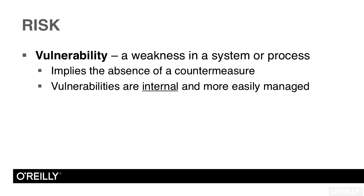If there is a vulnerability, it implies the absence of a countermeasure. A countermeasure is the control that we put in place to help mitigate that risk. As we identify vulnerabilities, we implement countermeasures to eliminate or mitigate the weakness. Once a countermeasure is in place, the vulnerability may not exist anymore.